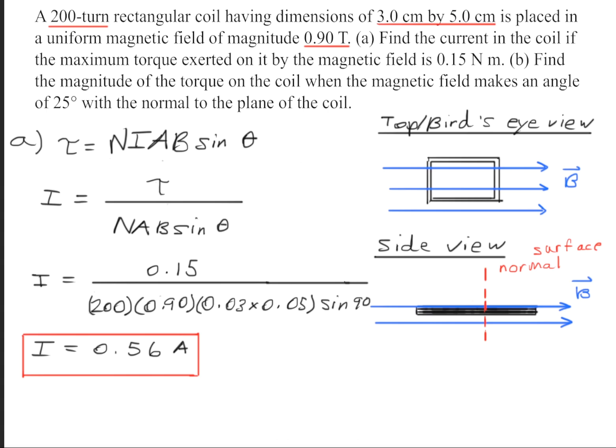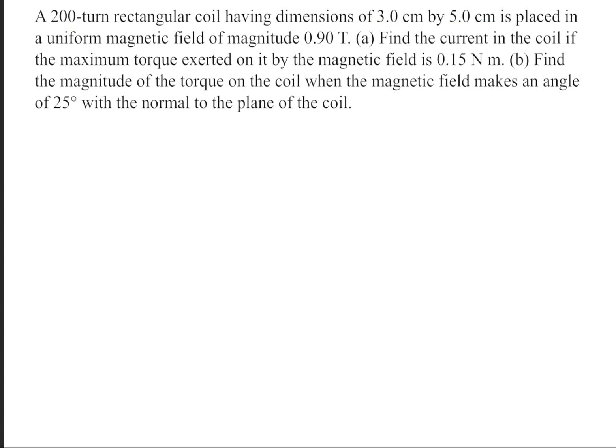To solve part B, once again we're going to make an illustration to demonstrate what's going on in the equation. Part B wants us to find the magnitude of the torque on the coil when the magnetic field is at a 25 degree angle. The magnetic field as I've drawn here is 25 degrees from the surface normal or the magnetic moment.